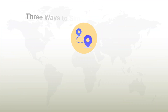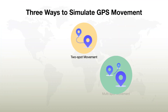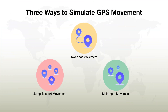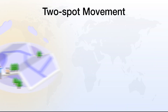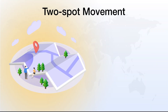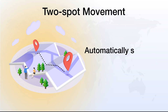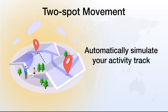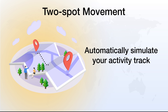Next are three ways to simulate GPS movement on iPhone or Android. One: two-spot movement. Select the start and end spots and the software will automatically simulate the trajectory of your activity, allowing your device to move automatically between these two locations.